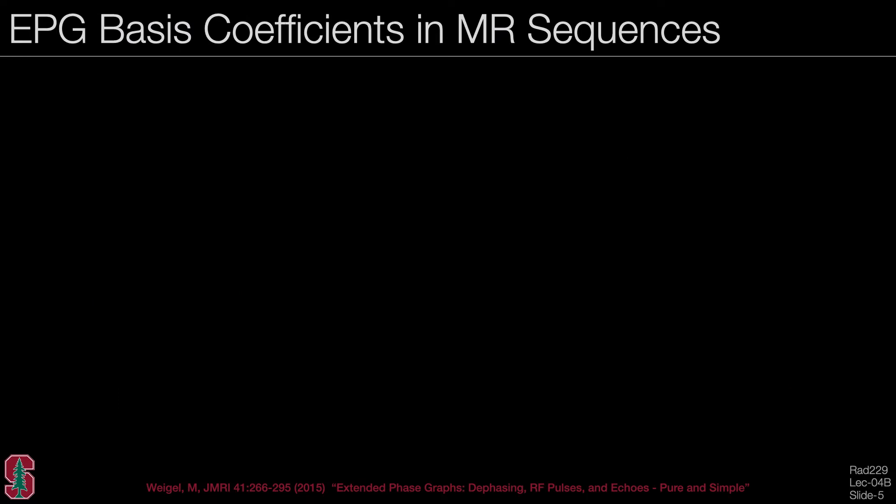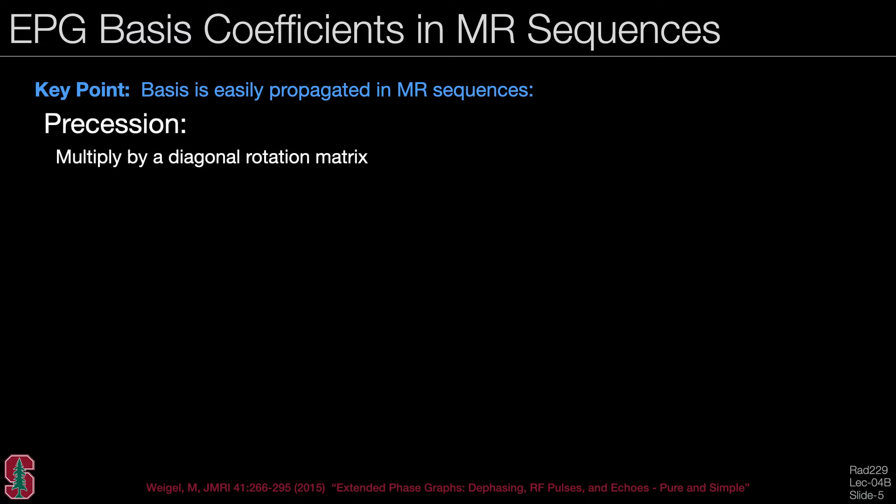We will first review how EPG basis coefficients propagate in MR sequences. The key point is that the basis is easily propagated, which is why we use this system. Precession is a multiplication by a diagonal rotation matrix.